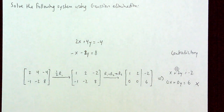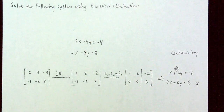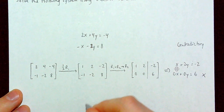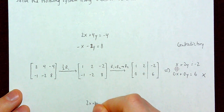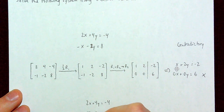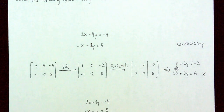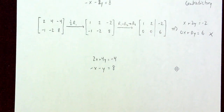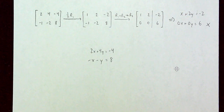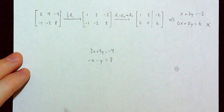But let's do this with something that actually gives us a workable result. I'm going to take this same system and make one small tweak: the system is now 2X plus 4Y equals negative 4, and negative X minus Y equals positive 8.